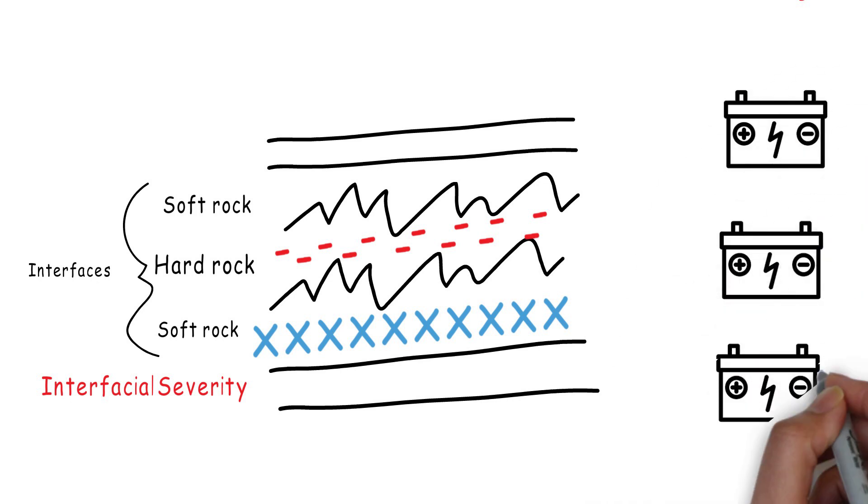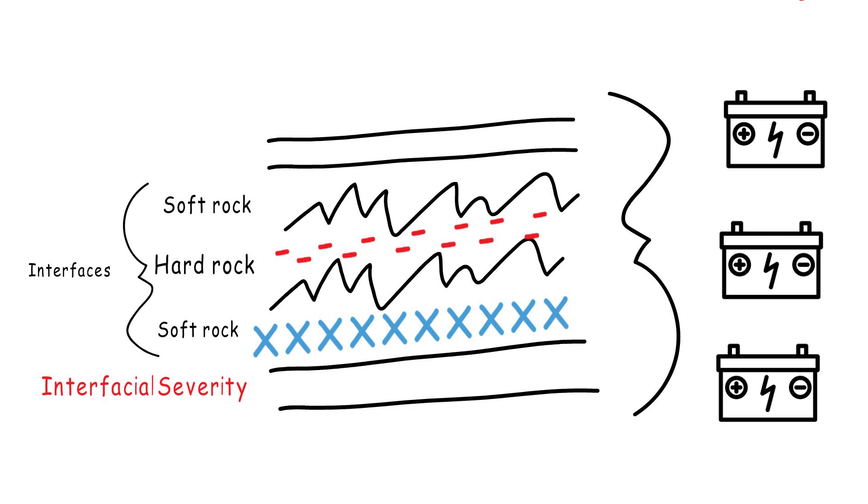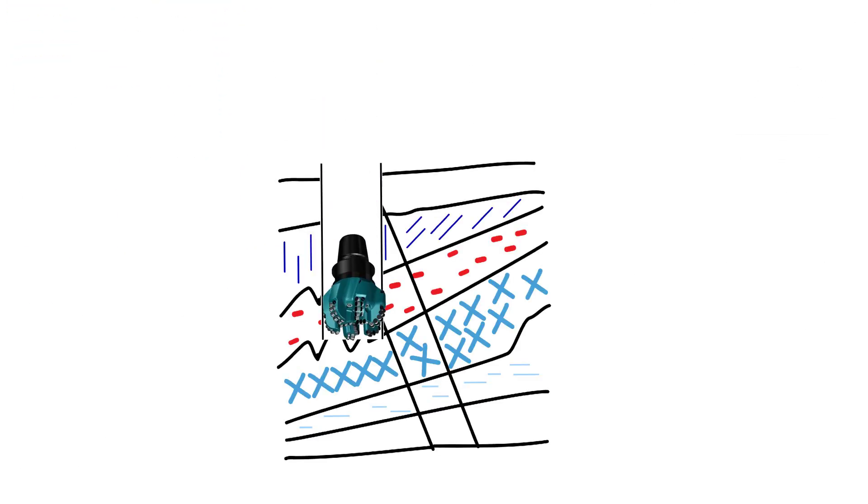Everything in drilling is about converting energy into a hole in the ground. The drill bit is where the potential energy of weight on bit gets converted into depth of cut into the rock.